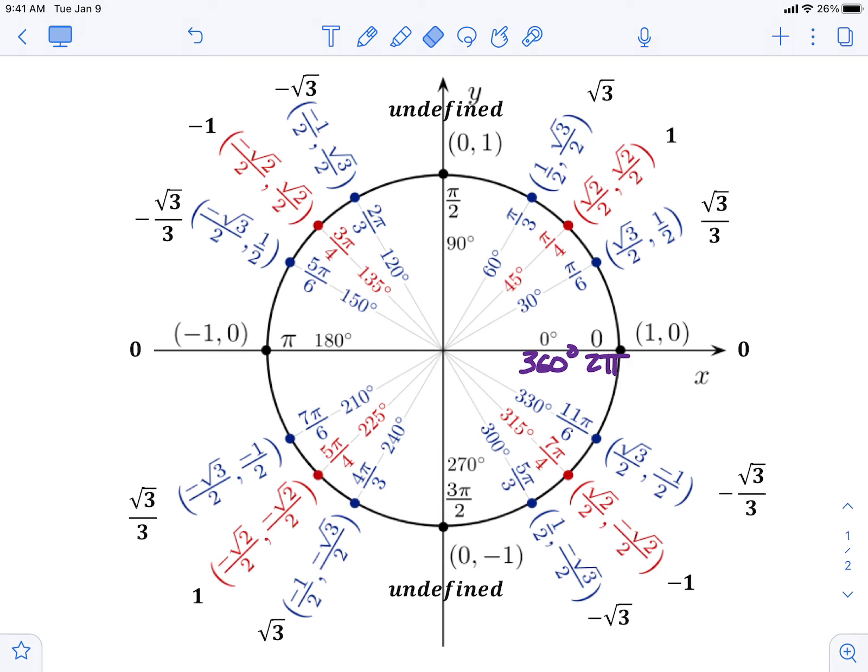Hey guys, this is Mr. Gron and this is 13.3, the unit circle. Now this is a filled out unit circle. One thing that we do in class is usually to fill out a blank one, but rather than make a video of me filling out a blank one, I just want to take a filled out one and explain all the different parts of it. This is a circle with a radius of one, so the measurement from the center to the edge of the circle is one unit, and that gives it some very special properties.